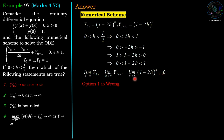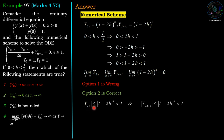Option 1 is wrong — it claims y_n → ∞ as n → ∞. Option 2 is correct: y_n → 0 as n → ∞. Since |y_{2n}| ≤ (1 - 2h)^n < 1 and |y_{2n+1}| ≤ (1 - 2h)^n < 1, y_n is bounded by 1, so option 3 is also correct.